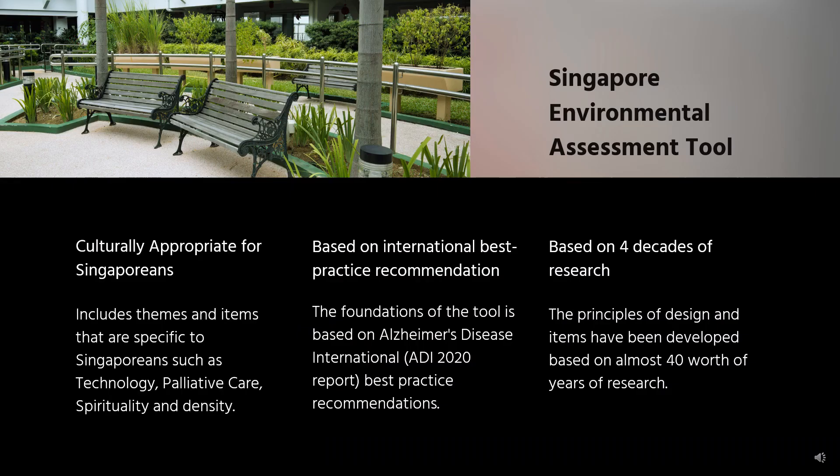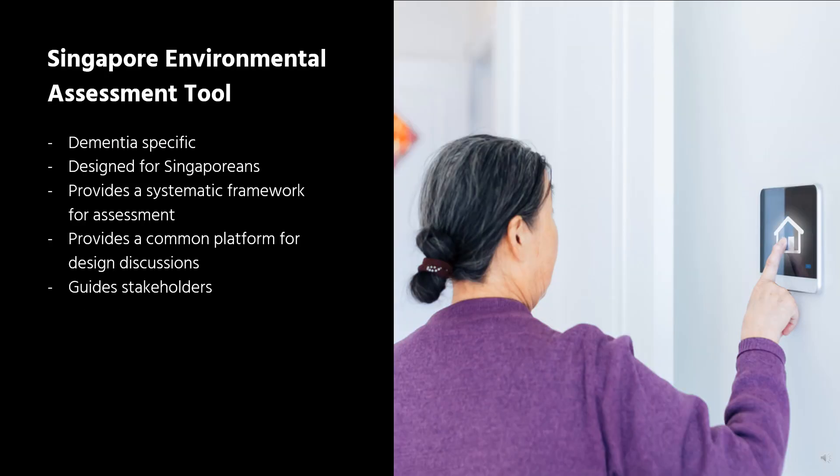Let's move on to the Singapore Environmental Assessment Tool, or the SEAT for short. This is an environmental tool with its foundations in Australia and has been adapted for the Singaporean population. The tool, which is based on 40 years of research in dementia environmental design, is aligned with evidence-based best practice recommendations and principles of design, which can be found in the Alzheimer's Disease International 2020 report. The tool differs from the Australian version, as it includes themes and items specific to Singaporeans, such as technology, palliative care, spirituality and density. In summary, the SEAT is dementia-specific, designed for Singaporeans, provides a systematic framework for assessment, provides a common platform for design discussions, and guides Singaporean stakeholders.